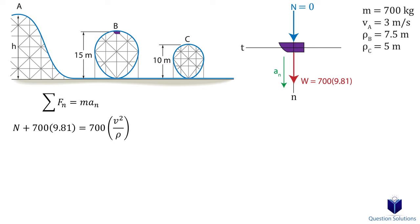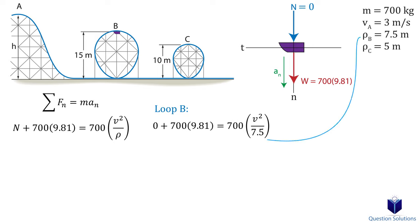Let's consider loop B first. We know the radius of curvature is 7.5 meters, and the normal force is zero. So we can solve for velocity. This velocity tells us the minimum velocity required for the car to stay on the track at point B.